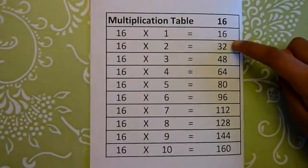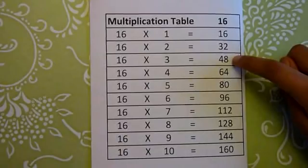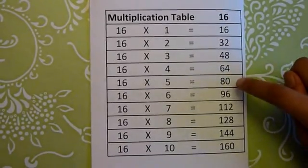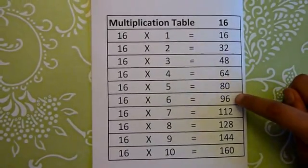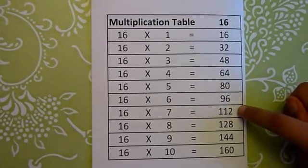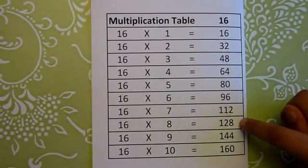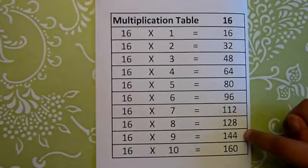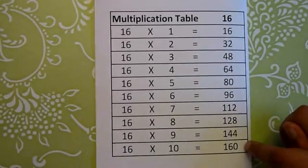16 ones are 16, 16 twos are 32, 16 threes are 48, 16 fours are 64, 16 fives are 80, 16 sixes are 96, 16 sevens are 112, 16 eights are 128, 16 nines are 144, 16 tens are 160.